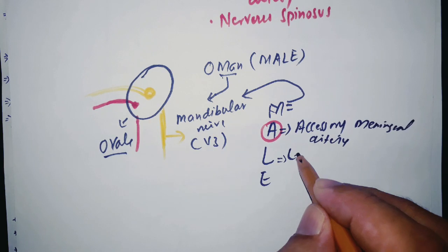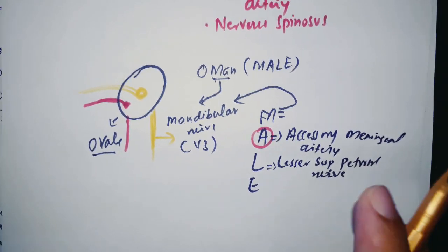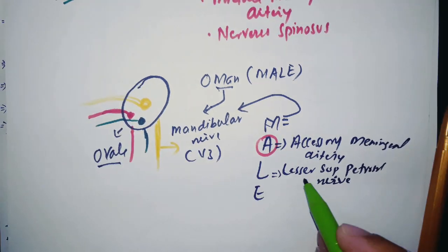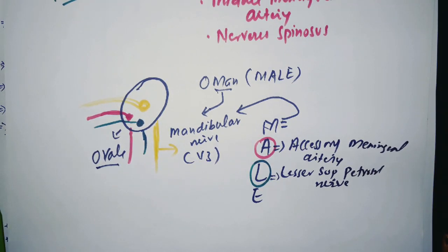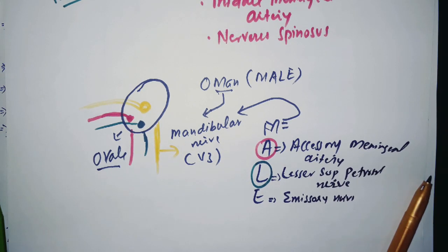From this L you will remember lesser superficial petrosal nerve, which is the branch of cranial nerve number nine and it is related with the otic ganglion. From this E you will just remember emissary vein, and emissary vein is most anterior in this foramen ovale.